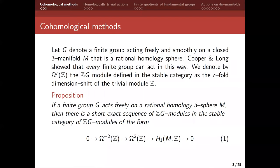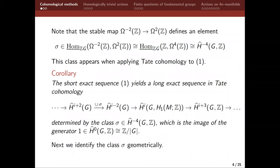This can be described functionally in terms of a cup product with a cohomology class. We have a stable map from Omega minus two of Z to Omega two of Z, which we can identify with homomorphisms in this category from Z to Omega four of Z. And this is isomorphic to H-hat minus four of G with coefficients in Z. This is the Tate cohomology — the difference between Tate cohomology and regular cohomology is that it is defined over the whole integers, not just the natural numbers, and takes values at negative indices.